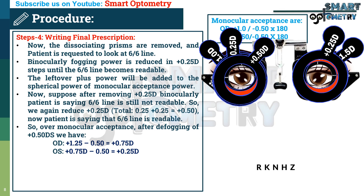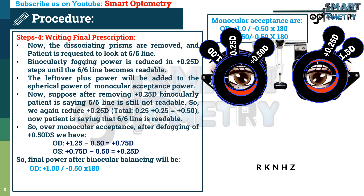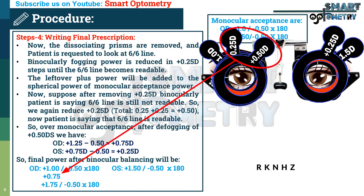This leftover power is added to the monocular acceptance. The final power after binocular balancing: right eye — monocular acceptance was plus 1.00 / minus 0.50 at 180 degrees, so adding plus 0.75 gives a final power of plus 1.75 / minus 0.50 at 180 degrees. Left eye — monocular acceptance was plus 1.50 / minus 0.50 at 180 degrees, so adding plus 0.25 gives a final power of plus 1.75 / minus 0.50 at 180 degrees.